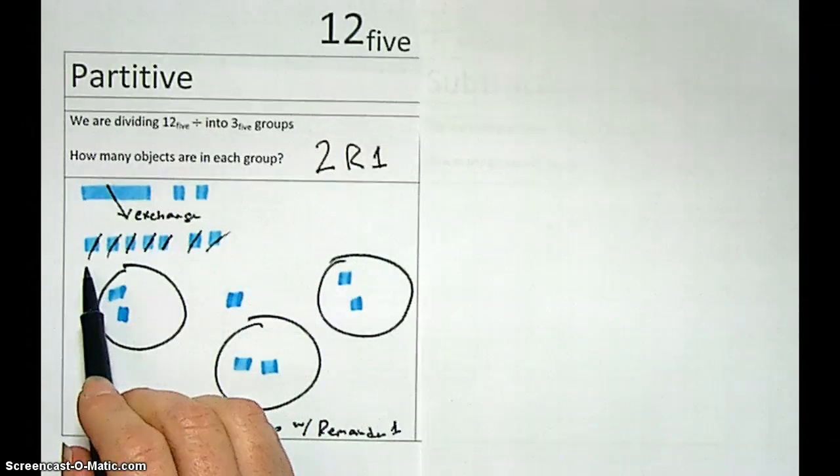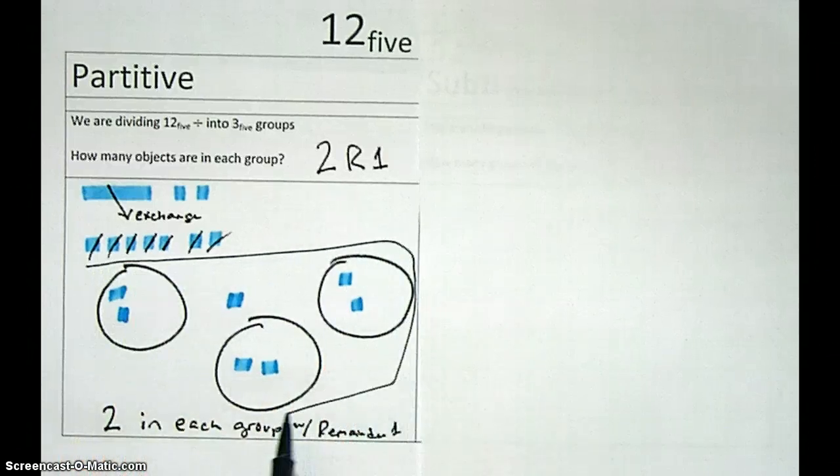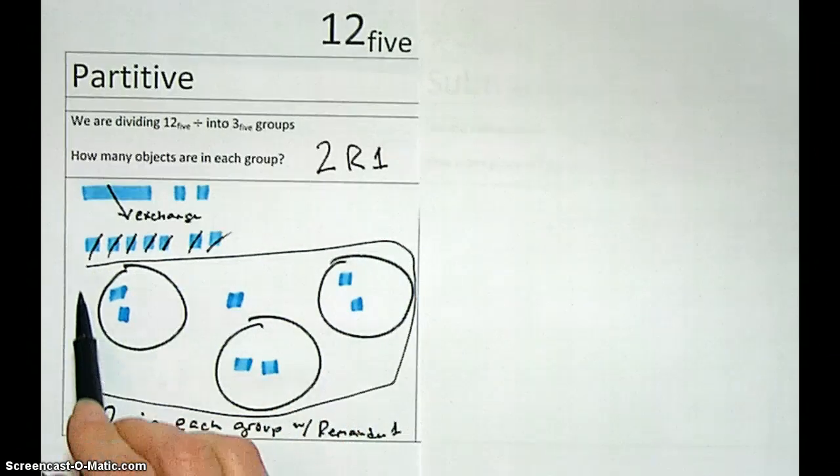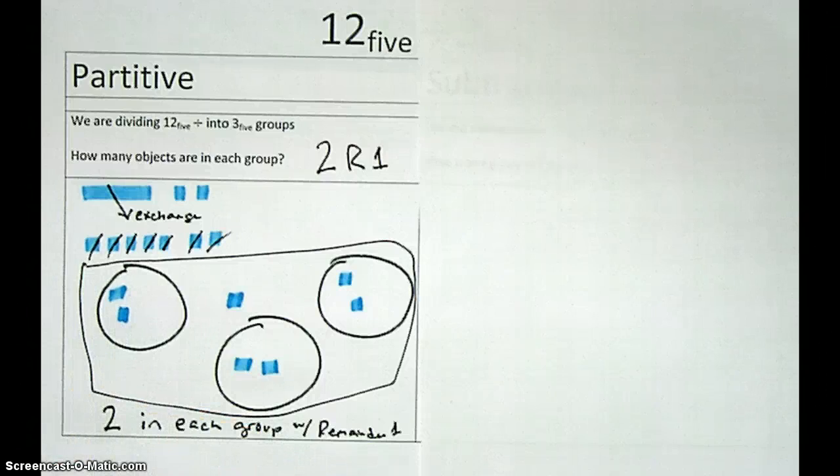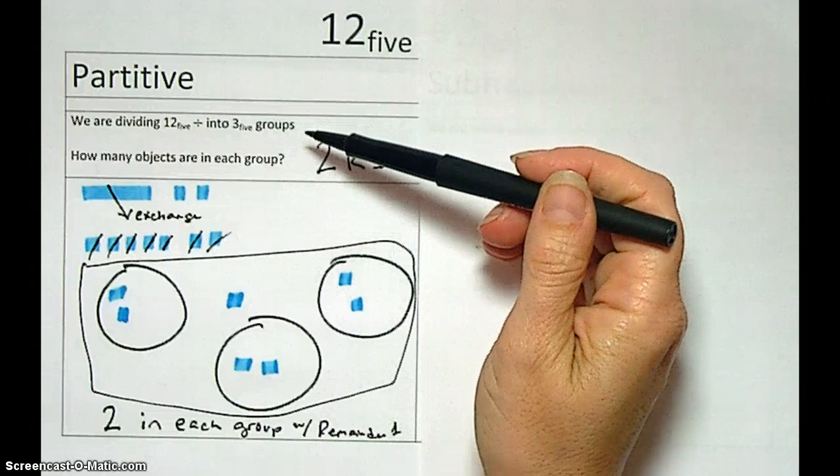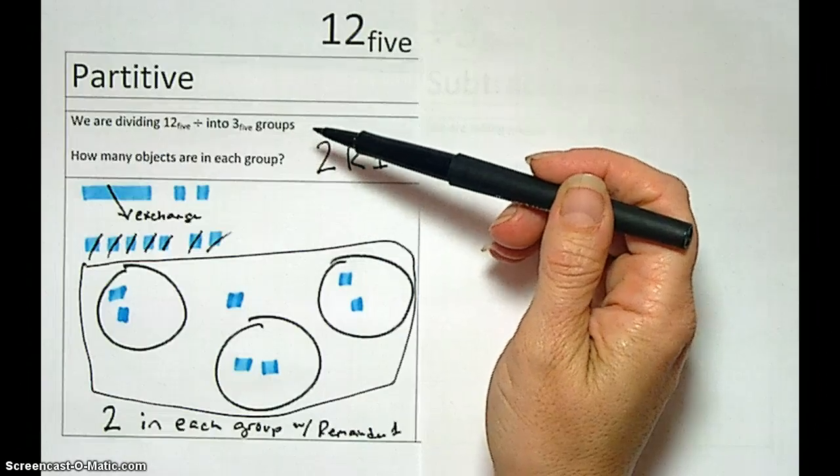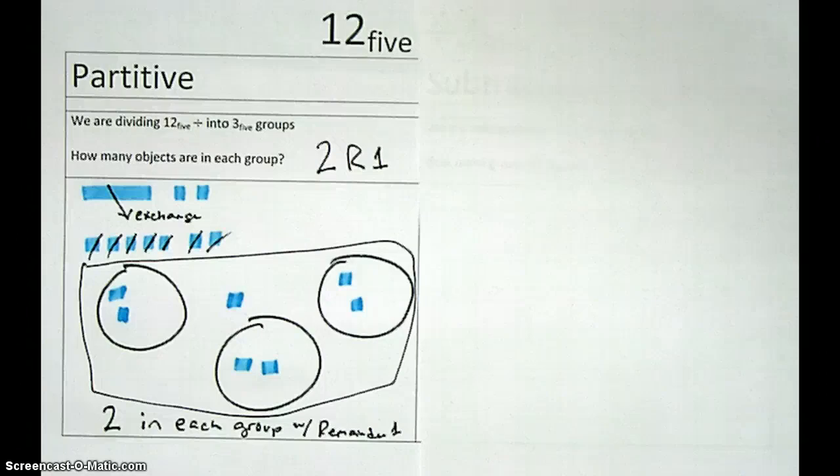And then we have our remaining one right there. Just hanging out all by himself out there. So the final picture for what you do when you do the partitive division is this. We have our 12, or 1, 2, base 5 objects divided into 3 base 5 groups. And how many objects are in each group. That language is really important.